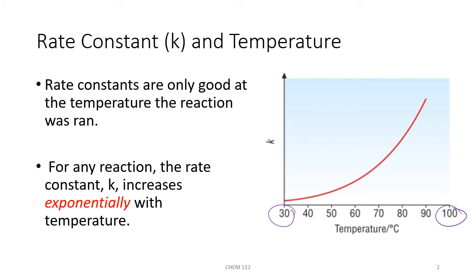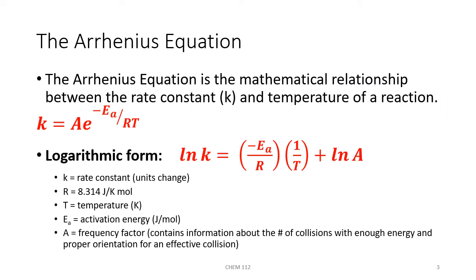In general, the rate constant K will increase exponentially as the temperature of the reaction increases. Mathematically, we can relate the rate constant to the temperature of a reaction by using something known as the Arrhenius equation. The Arrhenius equation says that K equals A times E raised to the negative Ea over RT. This form of the equation is not commonly used. Instead, the logarithmic form is more commonly used, which says the natural log of K equals negative Ea over R times 1 over T, plus the ln of A, where lowercase k is our rate constant. The units of the rate constant change depending upon the order, so don't worry about those too much.